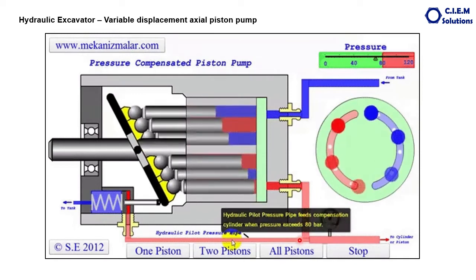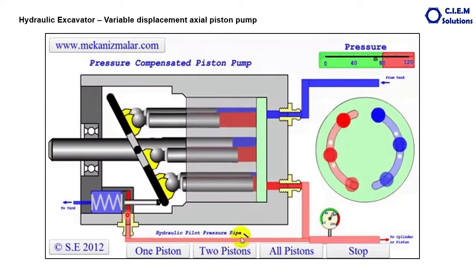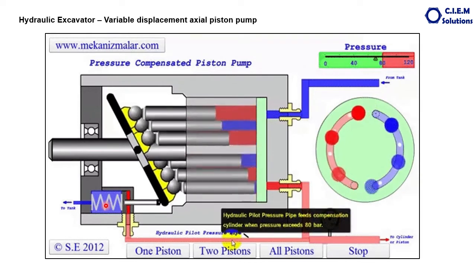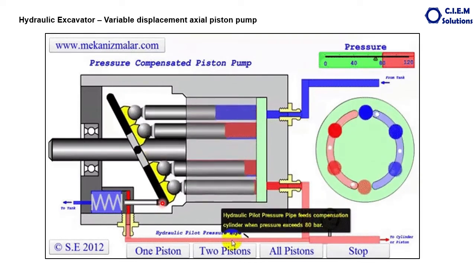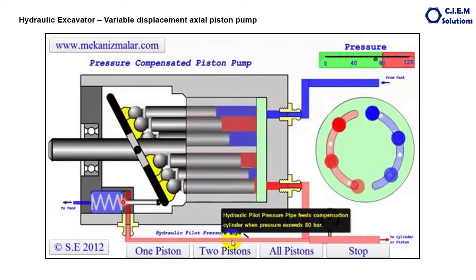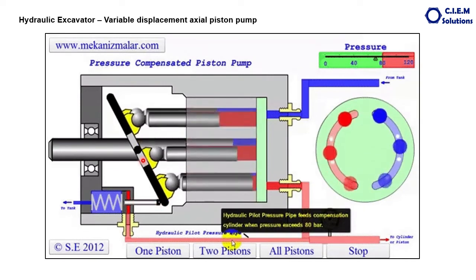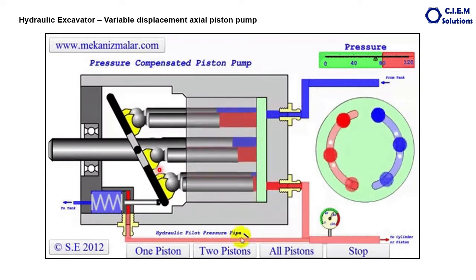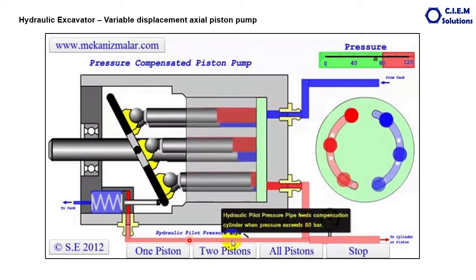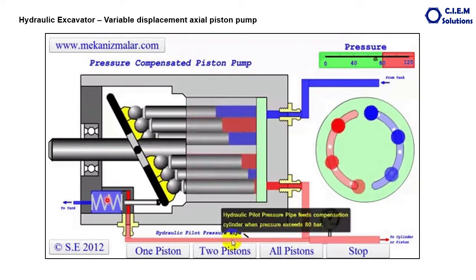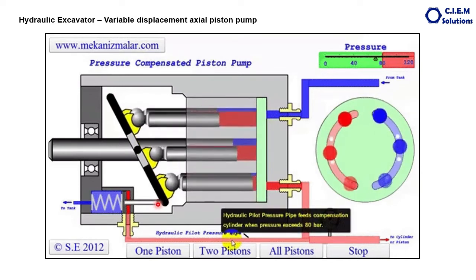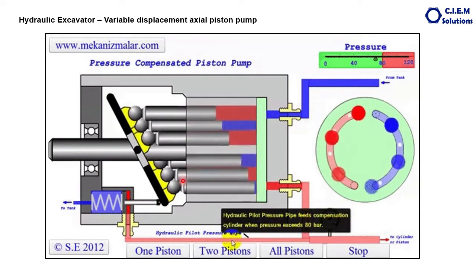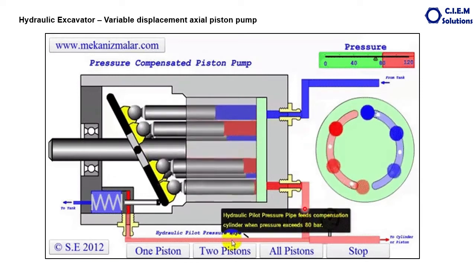If pressure is developed in the working system, that pressure acts on the governor valve, pushing it against the spring pressure. As this is attached to the swash plate, the swash plate is pulled to one side, causing a reduction in the angle and a reduction in the delivery of fluid. As the pressure is reduced in the system, the spring pressure pushes the rod forward, pushing the swash plate back and increasing the angle, thus increasing the delivery.